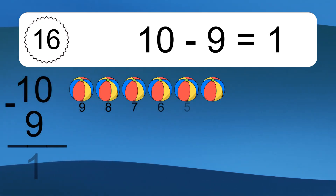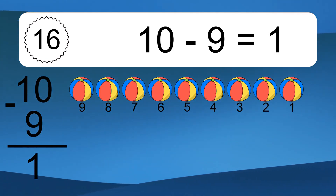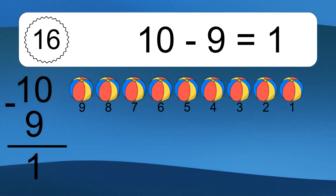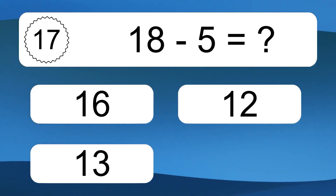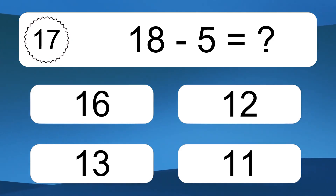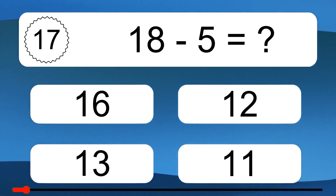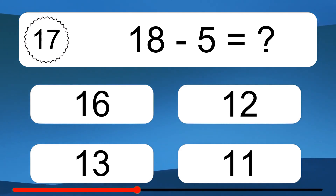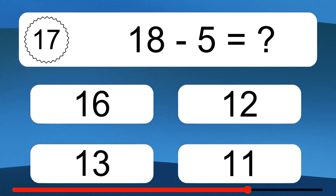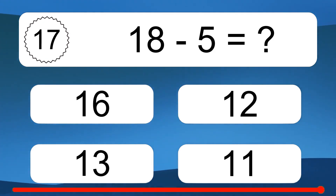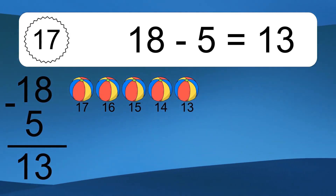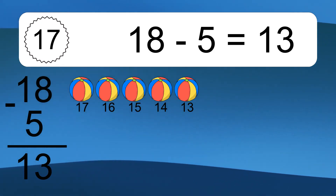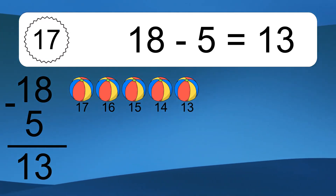10 minus 9 equals what? 10 minus 9 equals 1. Let's count it: 9, 8, 7, 6, 5, 4, 3, 2, 1. 18 minus 5 equals what? 18 minus 5 equals 13. Let's count it: 17, 16, 15, 14, 13.